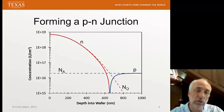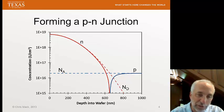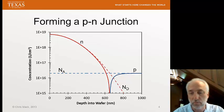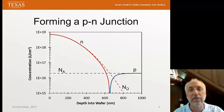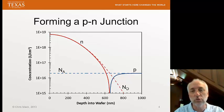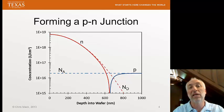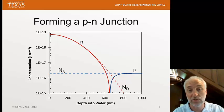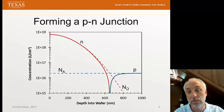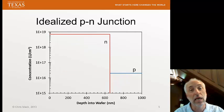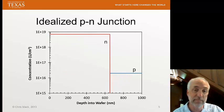That's an important property of junctions: at the junction, things look like intrinsic material. This is a very typical P-N junction — how it looks and how we form it. But before we analyze the properties, we're going to make a simplifying approximation.